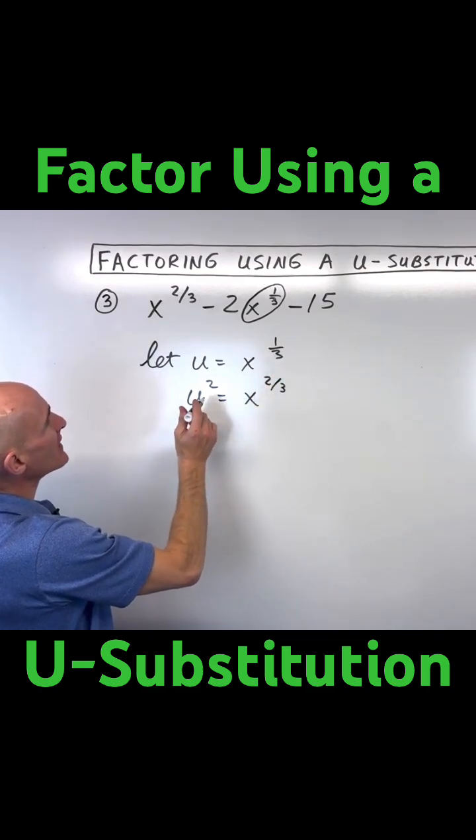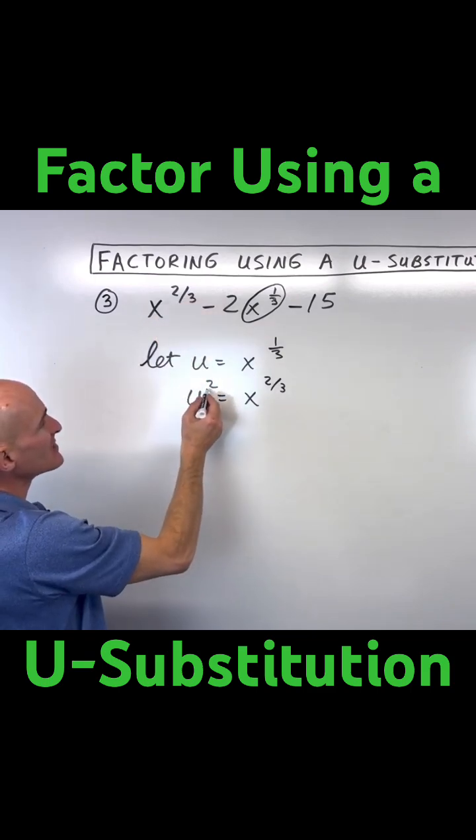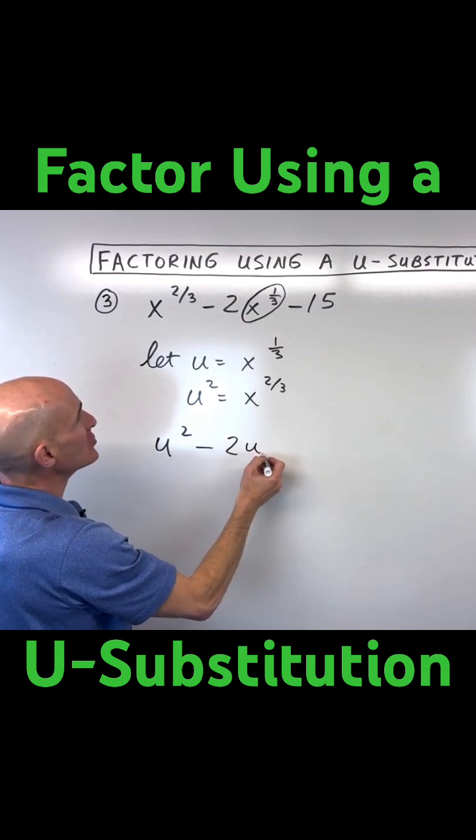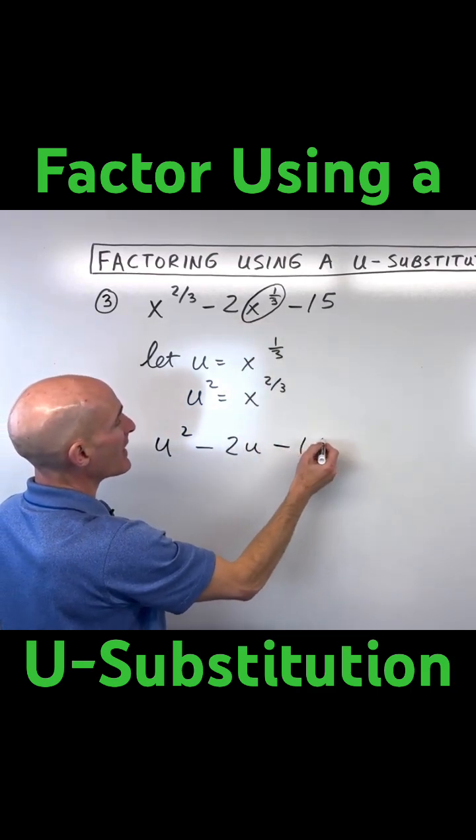Now what I can do is rewrite it a little bit. So x to the 2/3, that's u². Over here we have minus 2u, because x to the 1/3, and then minus 15.